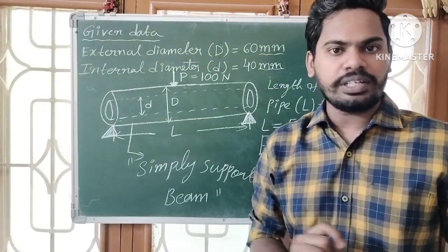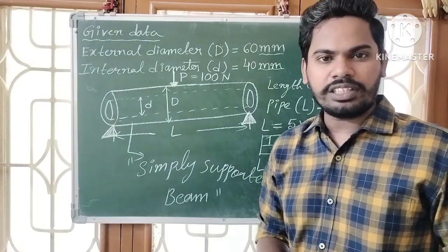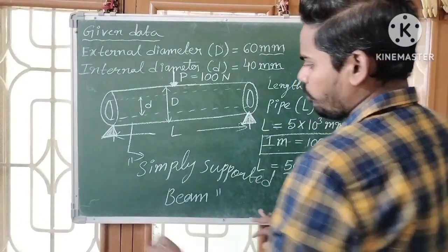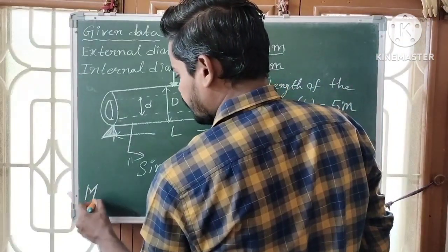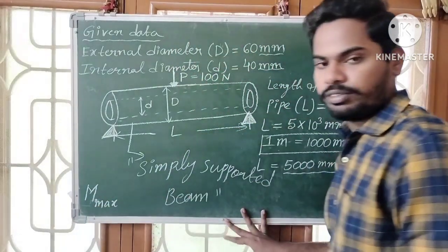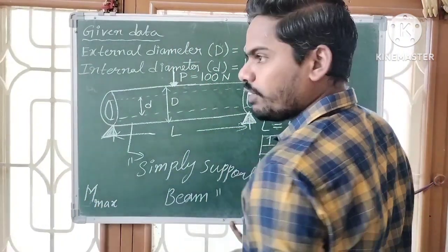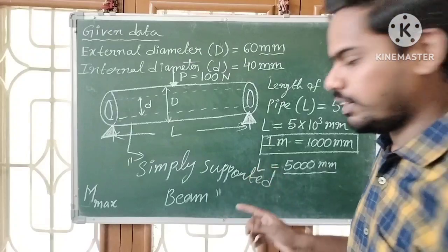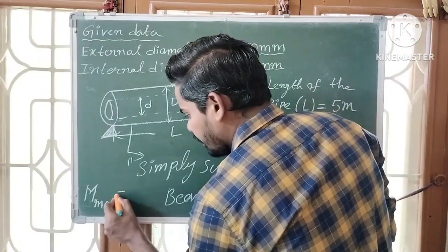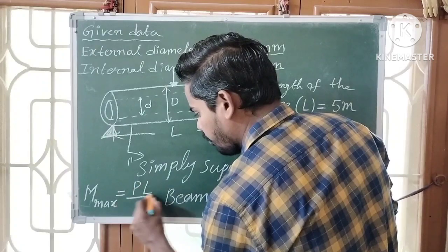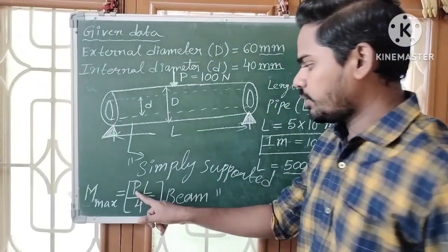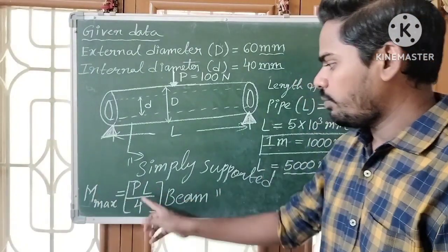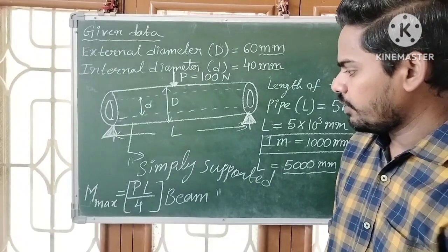In the case of a simply supported beam subjected to a point load at its center, from strength of materials or mechanics of solids, we have the formula for maximum bending moment: maximum bending moment is equal to P×L/4, where P is the point load and L is the length of the beam.